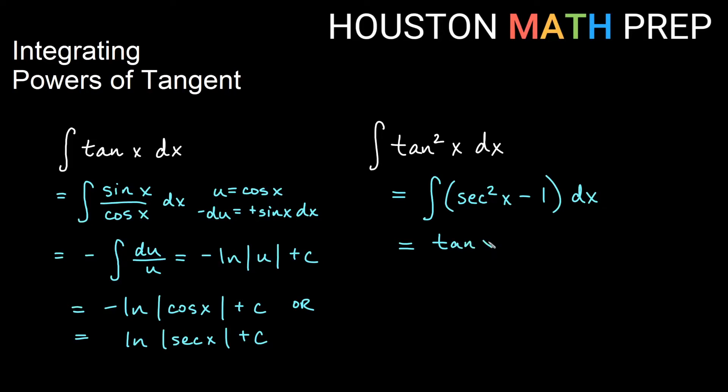We know from beginning calculus that the derivative of tangent x is secant squared x. So we should know the antiderivative of secant squared x is tan x, and the antiderivative of negative one would just be negative x plus c. As long as we know Pythagorean identity and change it to secant squared x minus 1, that one's not too bad.